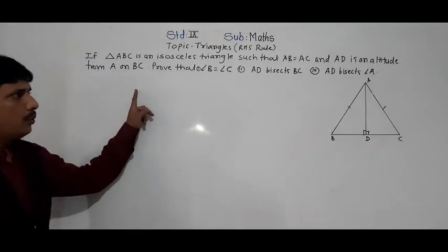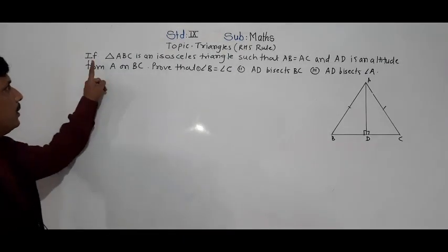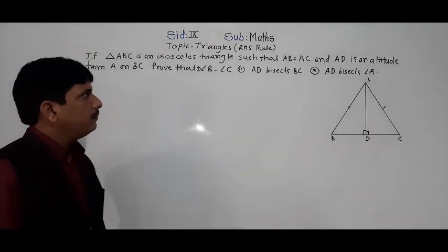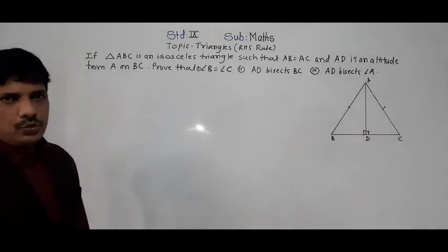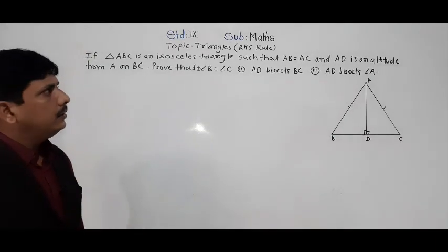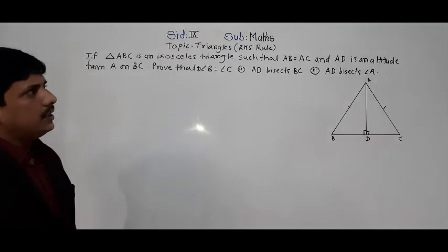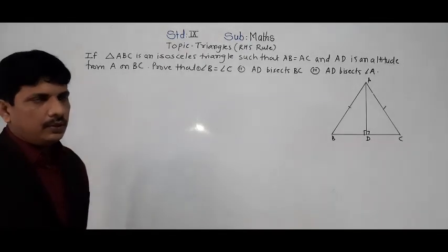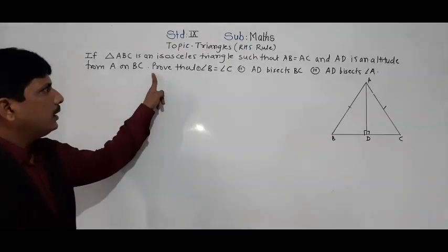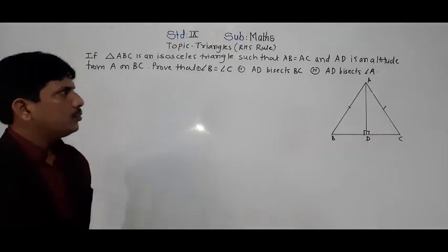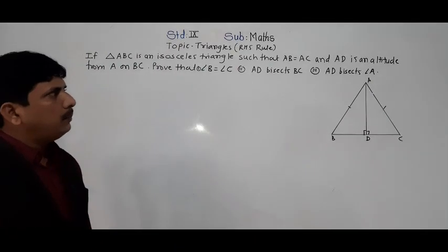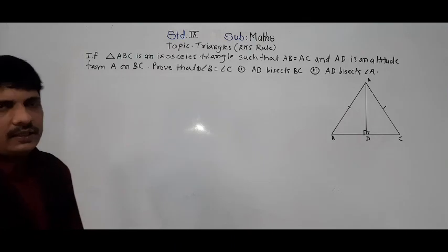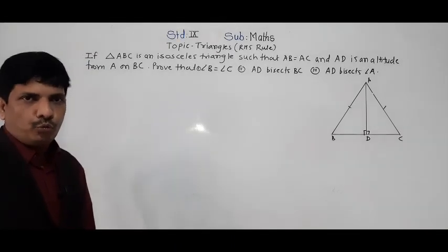The first problem is: if triangle ABC is an isosceles triangle such that AB is equal to AC, and AD is an altitude from A on BC, prove that angle B is equal to angle C, AD bisects BC, and AD bisects angle A. These three things we have to prove.